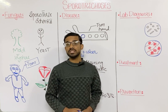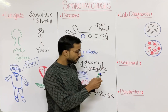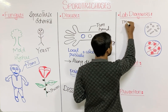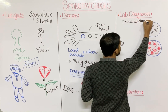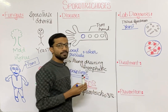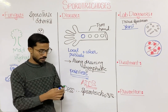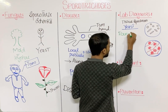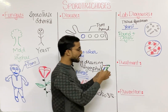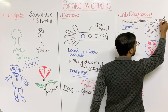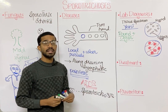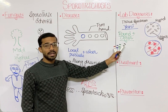For lab diagnosis, if we take tissue specimens, we will see the yeast form. Under microscopy, the yeast exists in two forms: round yeast and cigar-shaped yeast.